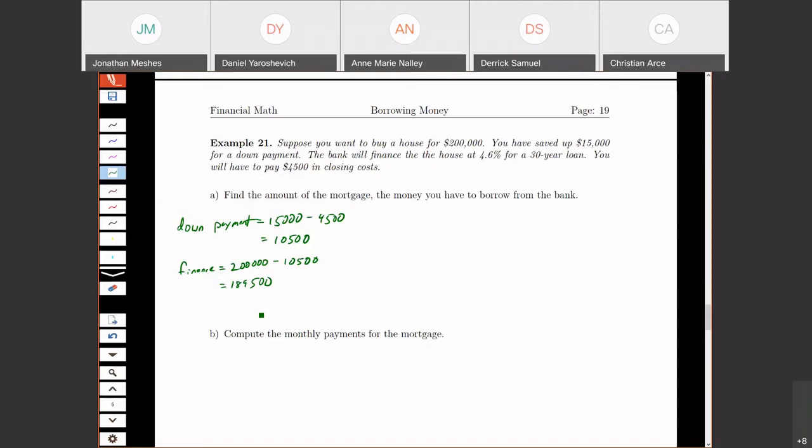So in real life, I would have to pay private mortgage insurance. I'd have to pay PMI for this, but we're not going to look at that in this example. So when I go to do my computations, I'm not using the $200,000. I'm using $189,500.